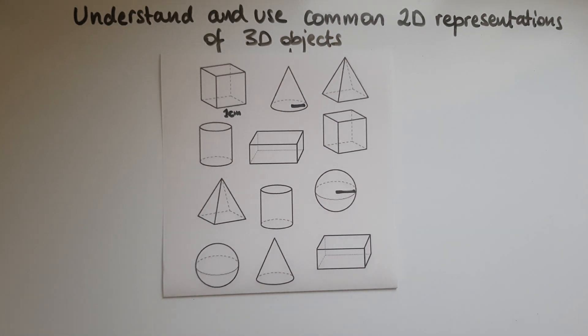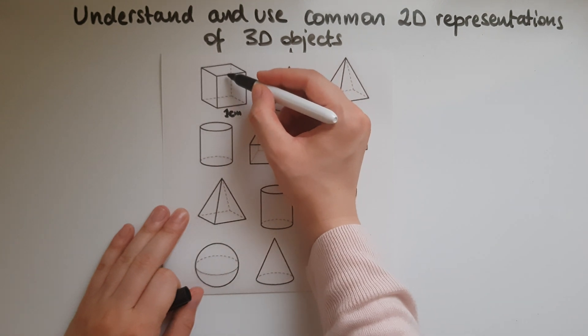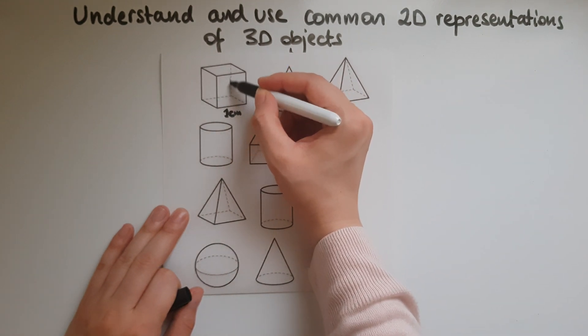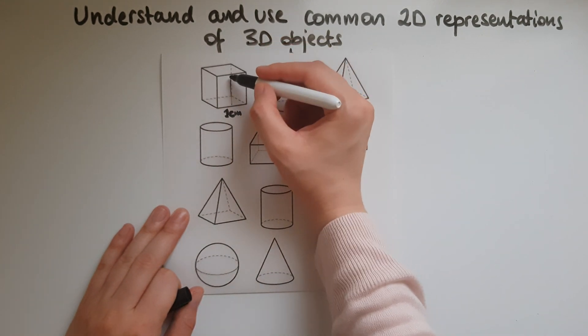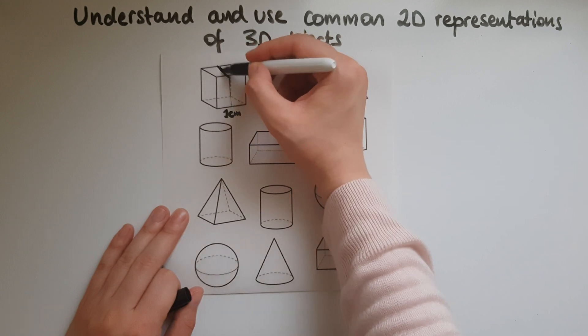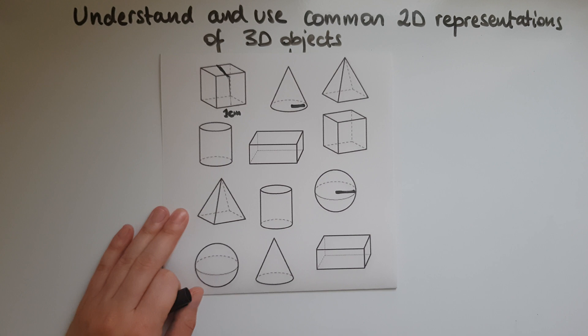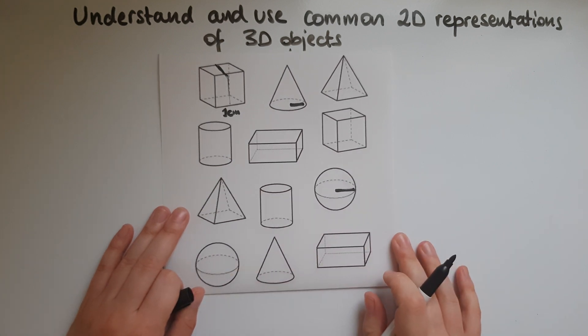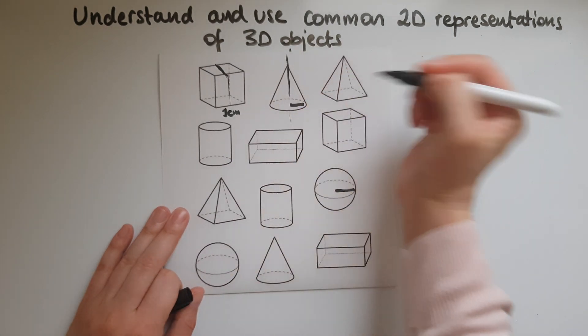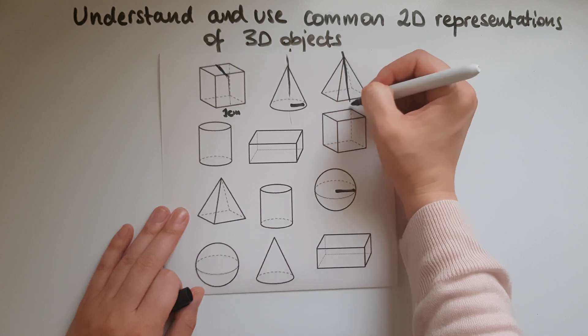We can also find the lines of symmetry because we know that this is halfway through this face. So this must be halfway through. So this cuts the shape in half. Or this one here for example. This one here as well.